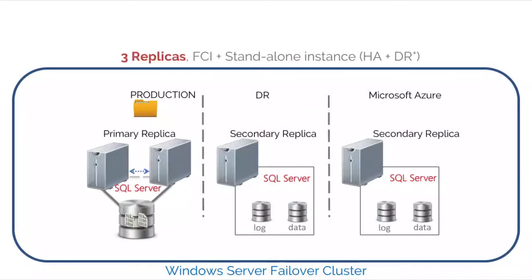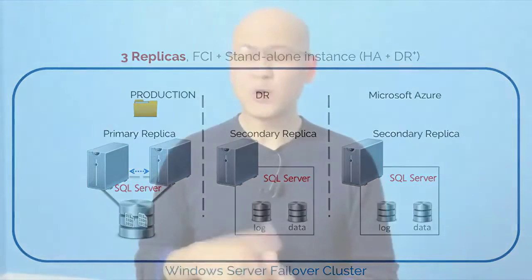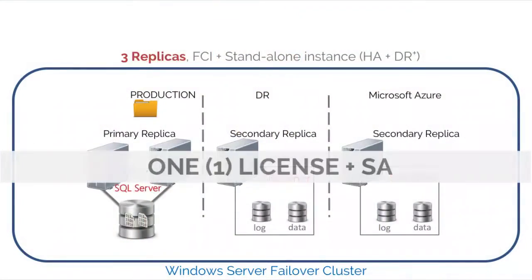This next pattern is similar — a four-node failover cluster but with only three replicas. Going back to what I mentioned, you're looking at operating system environments, not SQL Server instances. Here you have four operating system environments, meaning you need four licenses. In the past, you'd need two SQL Server licenses plus software assurance. Now you only need one, assuming that third secondary replica is running on Microsoft Azure.